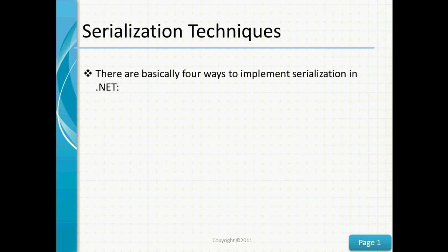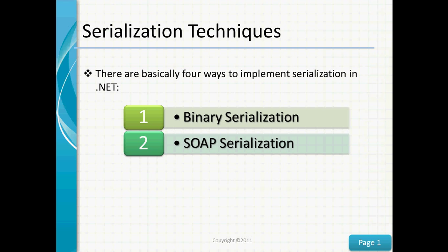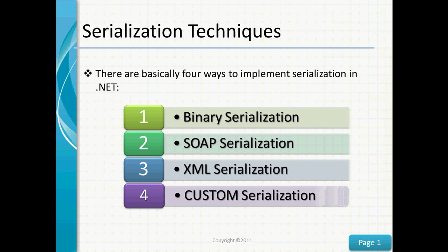There are basically four ways to implement serialization in .NET. We covered these briefly in the previous video, but just to reiterate, we'll go over them again. The first is binary serialization. The second is SOAP serialization. The third is XML serialization. Of course, we can do our own custom serialization, but generally it's just a bit more work.